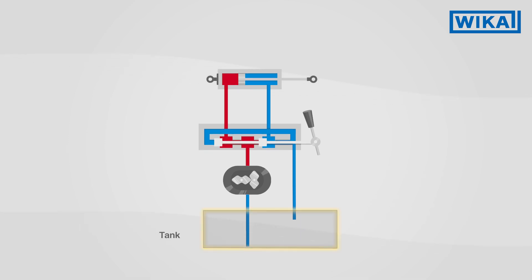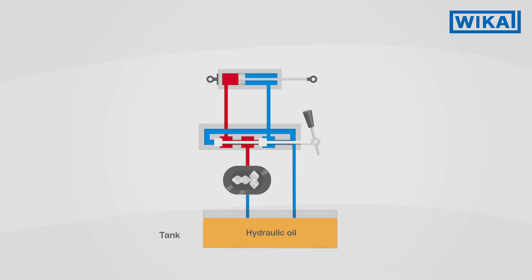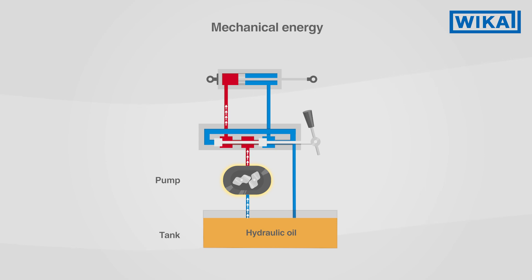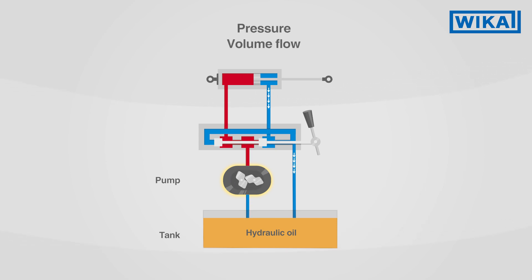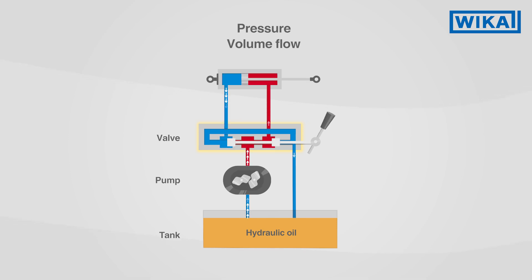The transmission medium is in a tank. In most cases, it is a hydraulic oil. The oil is sucked out of the tank and pumped into the circuit using the pump. This is how mechanical energy is converted into pressure and volume flow. Valves control the flow and the direction of the hydraulic fluid in this system.